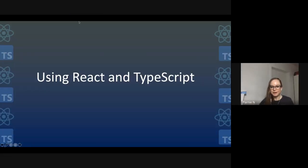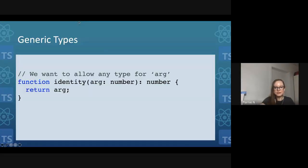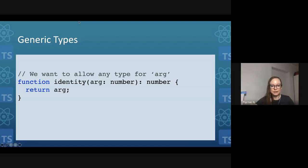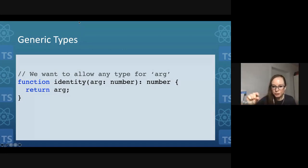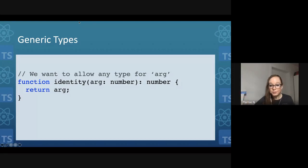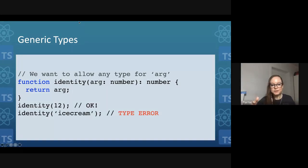Now let's get into how to actually write React components using TypeScript. There's a TypeScript concept useful to understand here: generic types. This example function called 'identity' takes some argument and returns that same argument. In TypeScript, we have to specify what the type is for arguments and return values. You can see we've put 'number' here — 'arg: number' tells TypeScript the argument is a number, and the colon number after tells TypeScript this function will return a number.